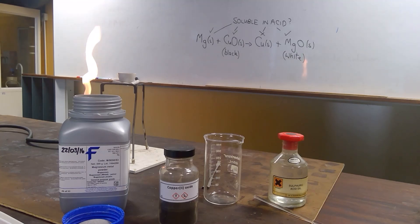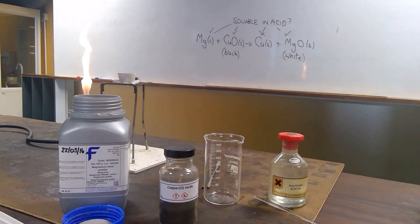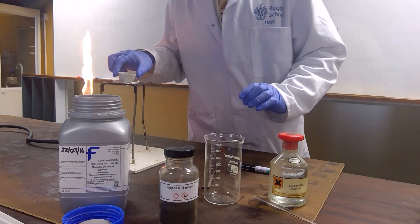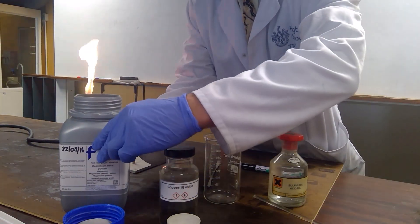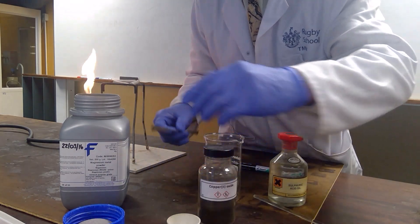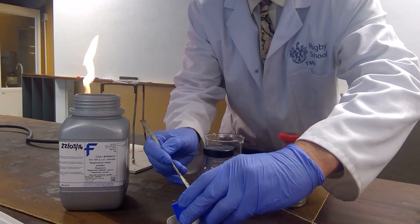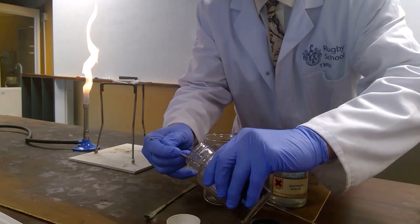The reaction is done in a crucible, and the magnesium powder and the copper oxide are intimately mixed. First, the magnesium powder is placed into the crucible. This is combined with a similar quantity of copper oxide.